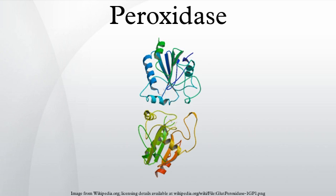The glutathione peroxidase family consists of eight known human isoforms. Glutathione peroxidases use glutathione as an electron donor and are active with both hydrogen peroxide and organic hydroperoxide substrates. GPX1, GPX2, GPX3, and GPX4 have been shown to be selenium-containing enzymes, whereas GPX6 is a selenoprotein in humans with cysteine-containing homologues in rodents.